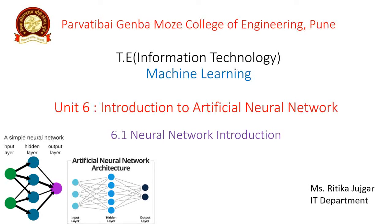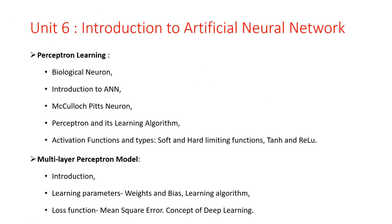In this video, we discuss what is meant by a neural network. In Unit 6, we cover the topic of Perceptron Learning. In that we discuss Biological Neural, Artificial Neural Network, the working of Artificial Neural Network, and the McCulloch-Pitts Neural Network Model. Then what is meant by Perceptron and the algorithms of Perceptron. What is meant by activation function and how this activation function is applied in the Artificial Neural Network.